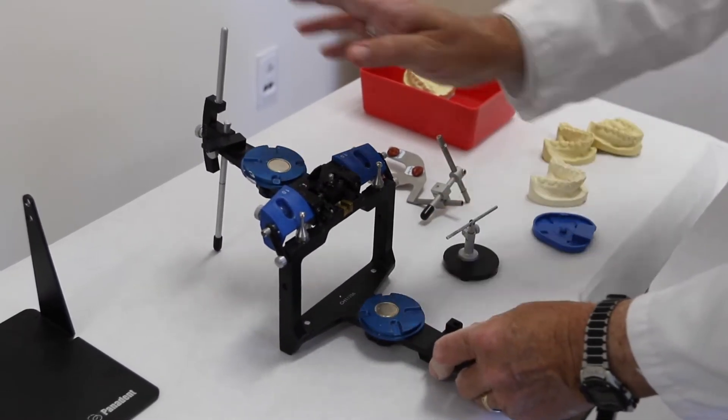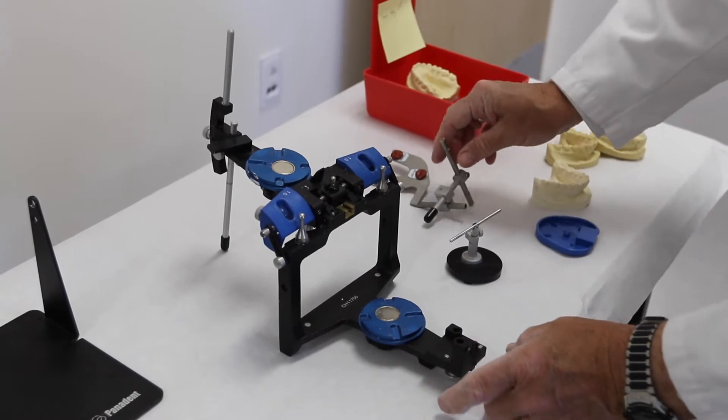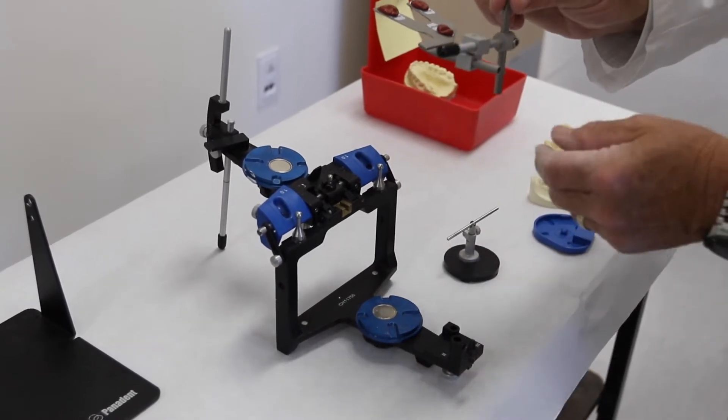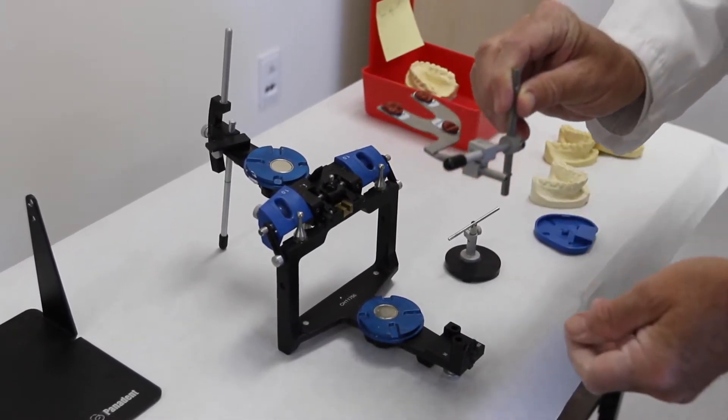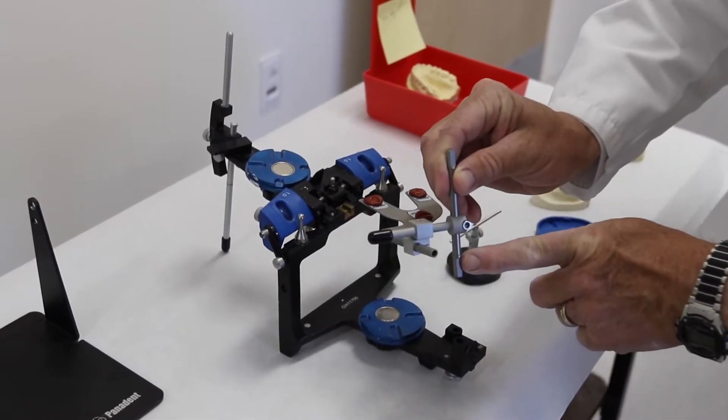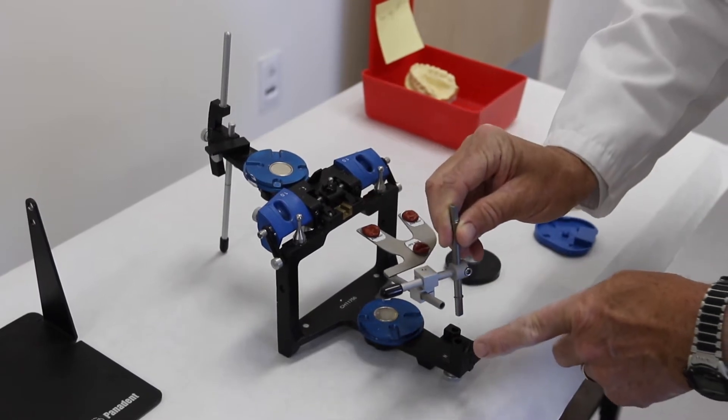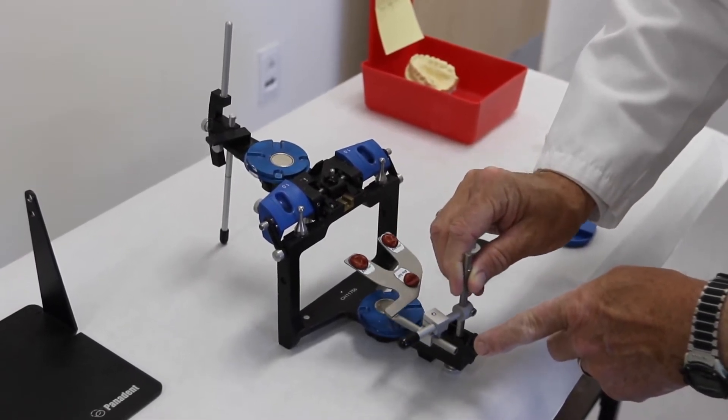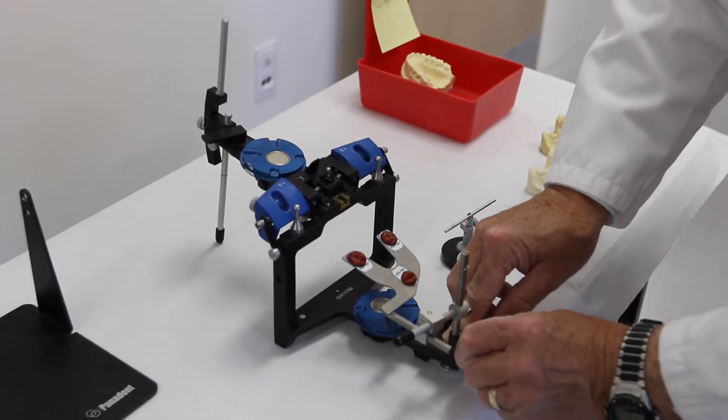Then attach the ear bolt transfer bite fork assembly into the fixture so that the square side or the flat side is toward this thumb screw. That way when you seat it, you'll see that move into position.